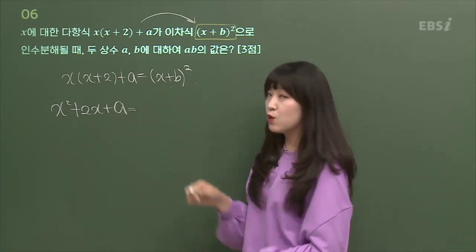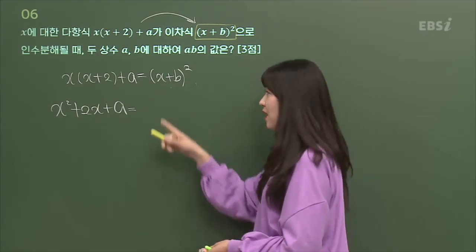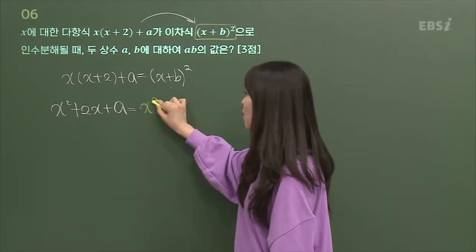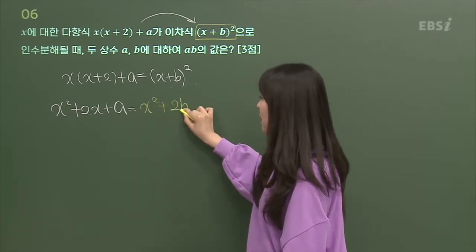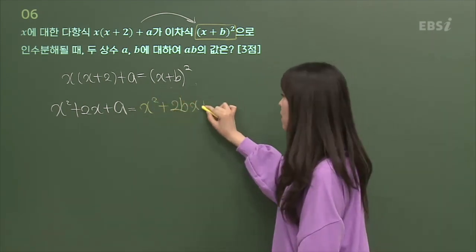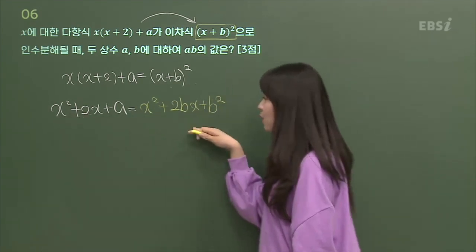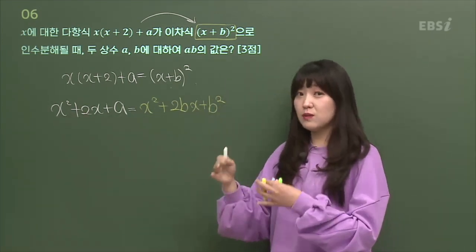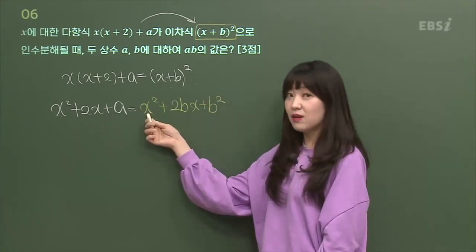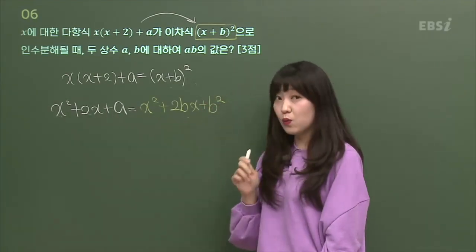그리고 얘는 완전 제곱식인데, 기억나? 공식? 항 두 개짜리 전체 제곱. 앞에 거 제곱 더하기 두 배의 앞에 거 뒤에 거니까 2BX, 그 다음에 뒤에 거 제곱이니까 B제곱. 근데 얘하고 얘하고 같다며. 그럼 똑같으면 되지. 나 X제곱 X제곱 똑같았어. 그러면 2X하고 2BX가 똑같아야 되지.